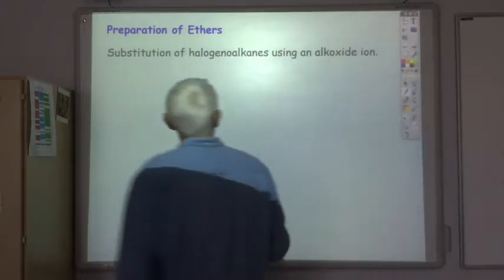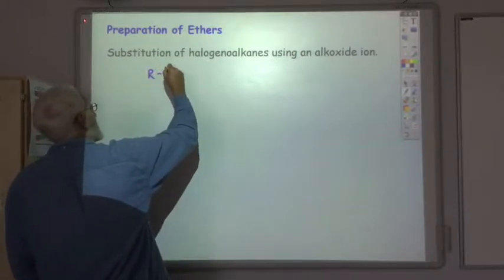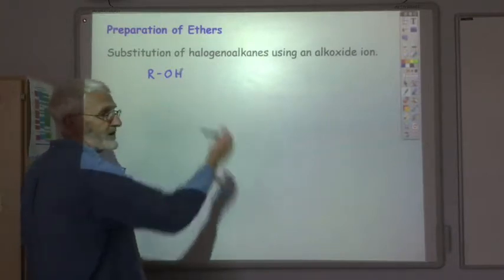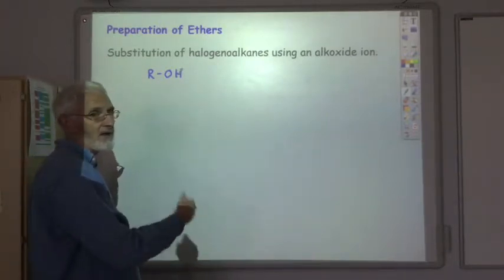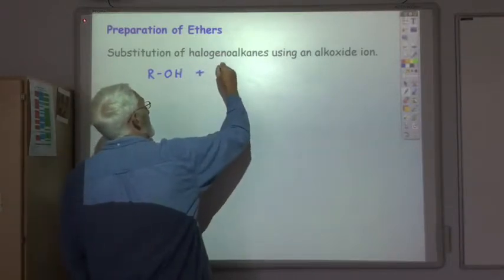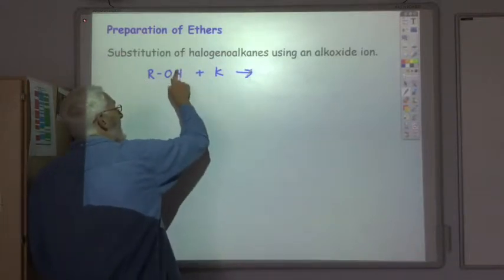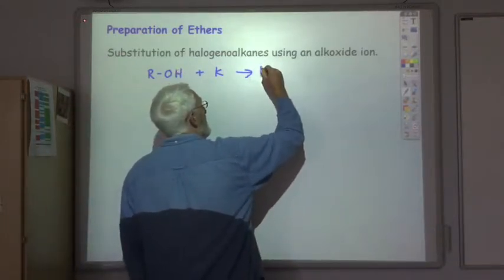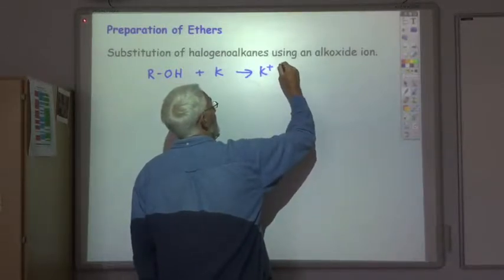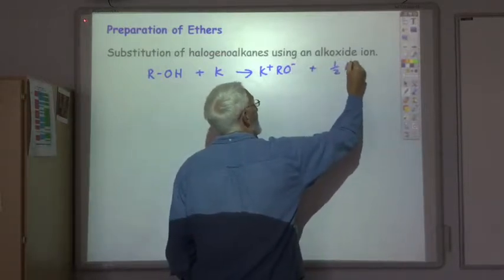So let's remind ourselves about the alkoxide ion. You make that by reacting an alcohol ROH, so R could be any alkyl group - methyl, ethyl, propyl, whatever - plus a reactive metal like potassium. You lose the H of the hydroxyl group producing the potassium alkoxide ion plus a half H2 gas.